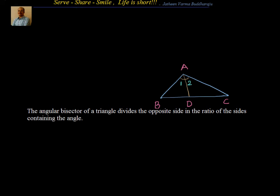Hello friends, welcome! In this session let's try to learn about the angle bisector theorem. First let's understand what the angle bisector theorem is, then we will see how to leverage the basic proportionality theorem to derive its proof. The angle bisector theorem states that the angle bisector of a triangle divides the opposite side in the ratio of the sides containing the angle.